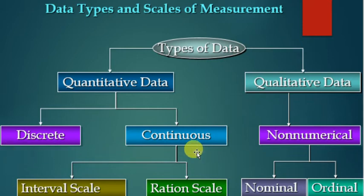This continuous data is further divided into interval scale and rational scale. The qualitative data is divided into nominal data and ordinal scale. Let's discuss qualitative and quantitative data one by one with examples.